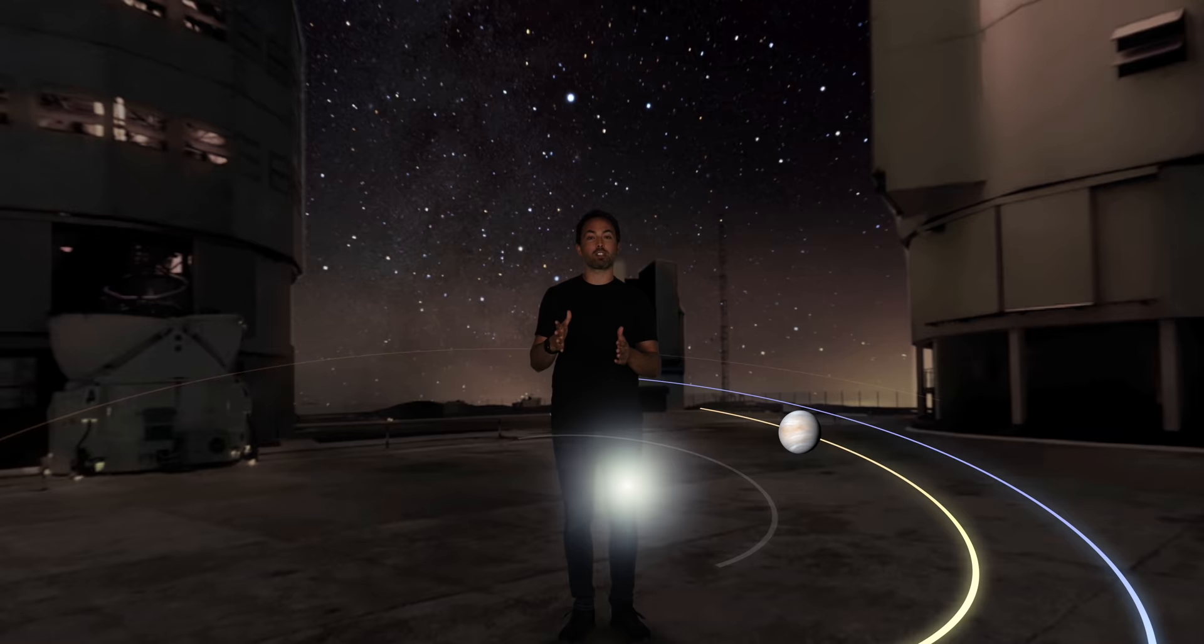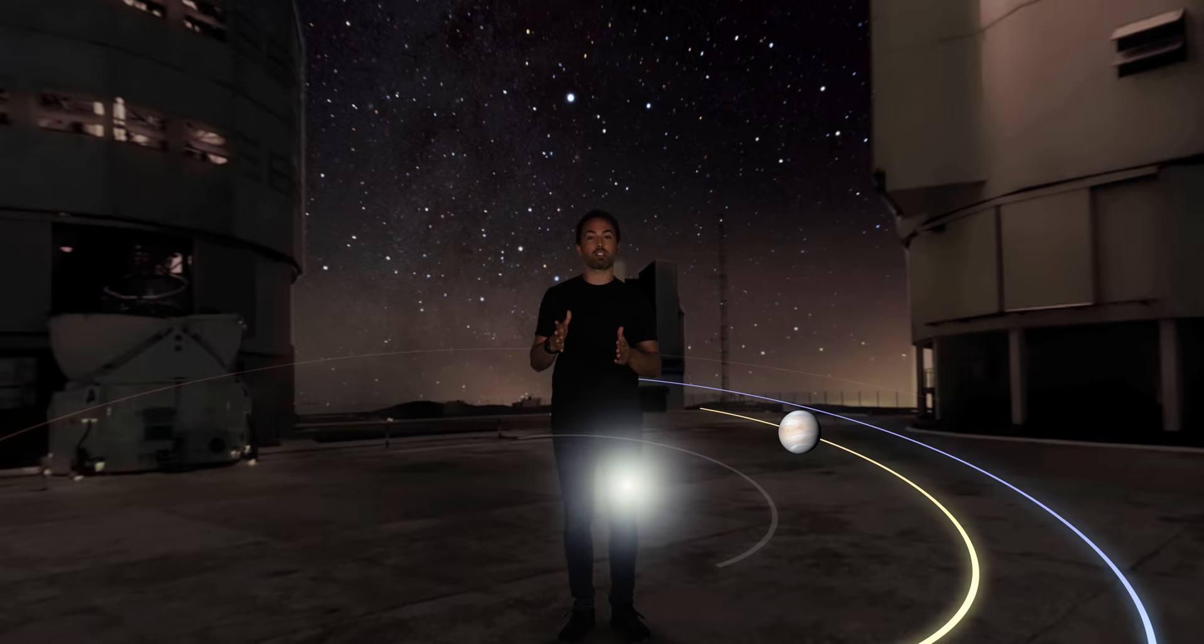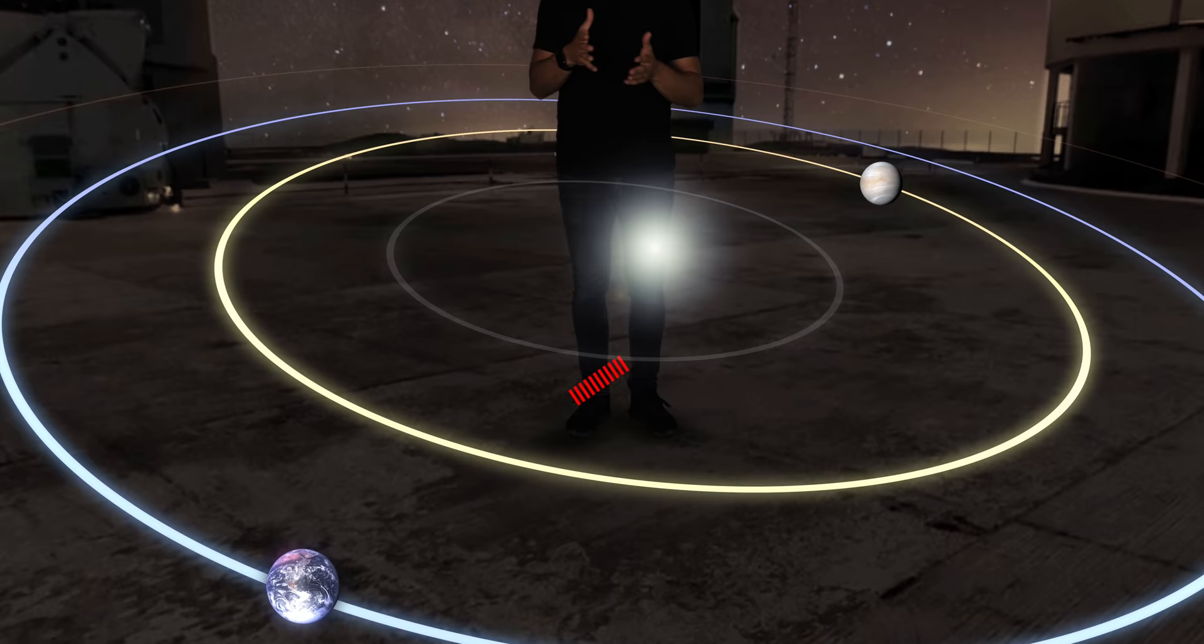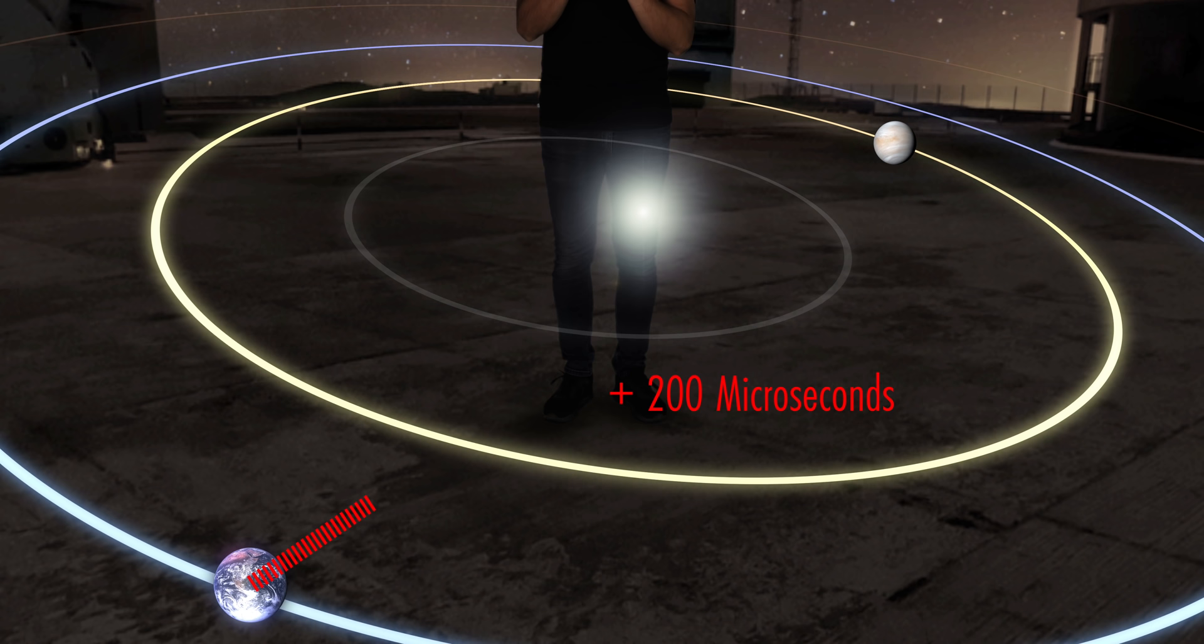Back in 1964, Irwin Shapiro suggested it would be possible to test this gravitational time delay by sending radar signals to Venus and measuring how long it takes for the echo to come back. He calculated that due to the gravitational influence of the Sun, the signals would take an extra 200 microseconds when Venus was on the other side of the Sun, compared to when it was close to us.